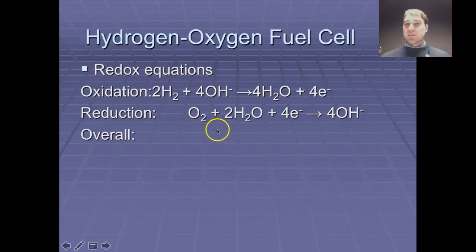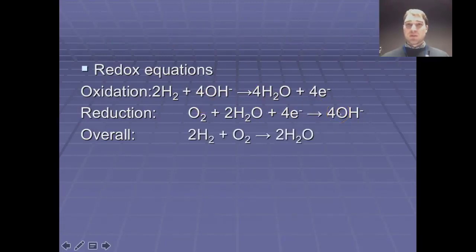At the cathode you're getting the reduction happening, so the oxygen is being reduced to hydroxide ions. But the hydroxide ions cancel out, so what you end up with is water being produced. So the overall equation is, you're reacting your hydrogen with your oxygen to produce water.